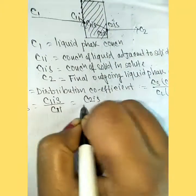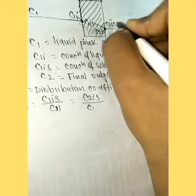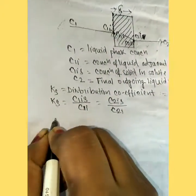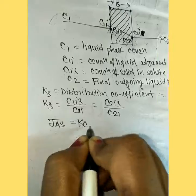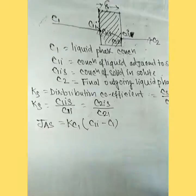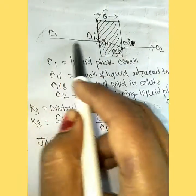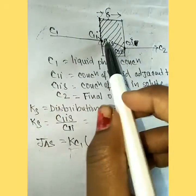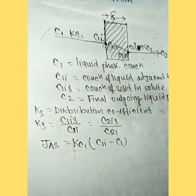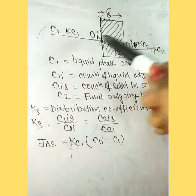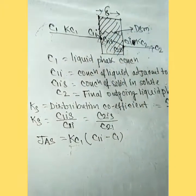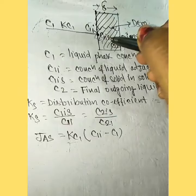Now we know that flux equals mass transfer coefficient times concentration difference. Here the liquid is transferred to liquid, so there should be a mass transfer coefficient. But here liquid diffuses into solid, so there will be diffusivity.